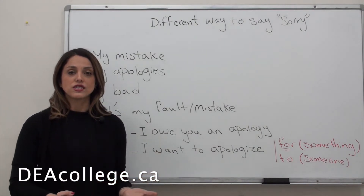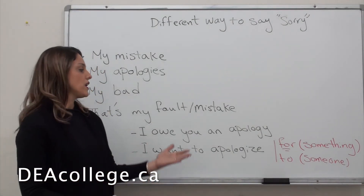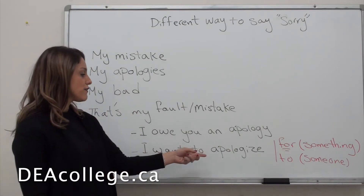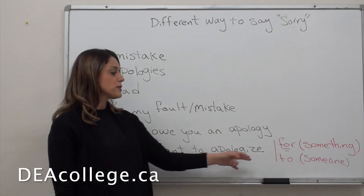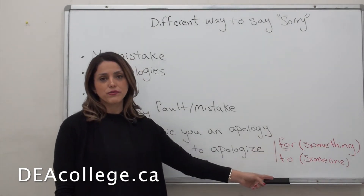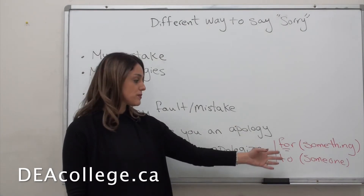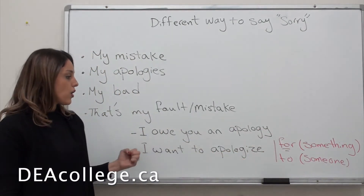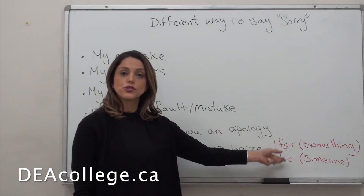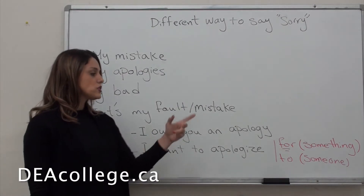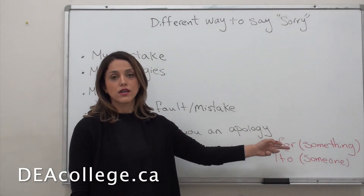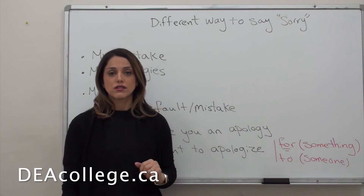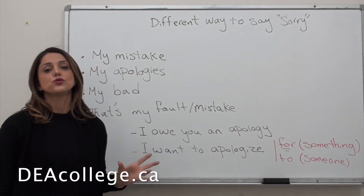After apologizing, you have to talk about the reason — why you want to apologize. Keep in mind the prepositions after 'apologize' — these are very important. You say 'I want to apologize for' something, or 'I want to apologize to' someone. For example: 'I want to apologize for my behavior, for my action' or 'I want to apologize to your sister, to your mother.'